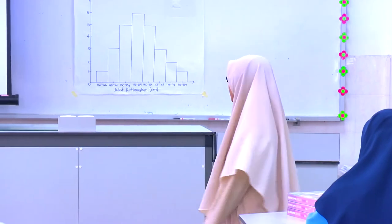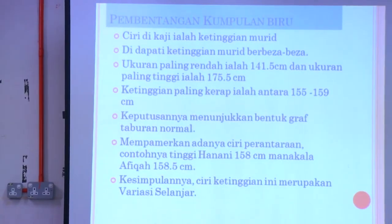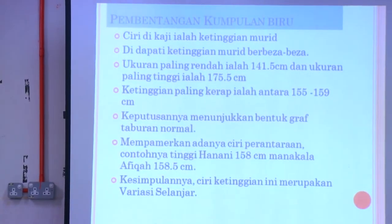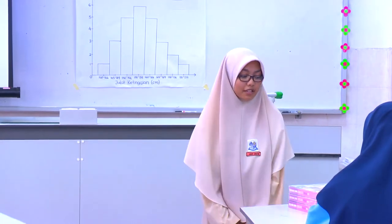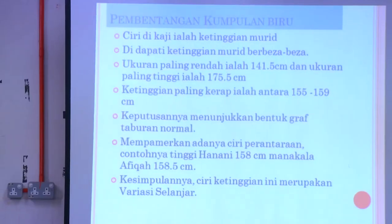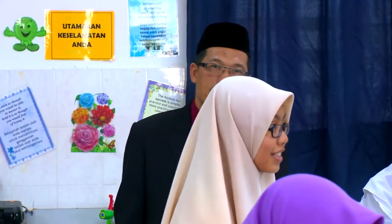Ini menunjukkan adanya ciri perantaraan. Contohnya, tinggi Hanani ialah 158 cm, manakala tinggi Afiqah ialah 158.5 cm. Kesimpulannya, ketinggian ialah variasi selanjar. Sekian, terima kasih.